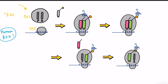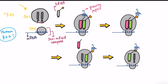The 30S subunit binds messenger RNA and initiates protein synthesis, while the 50S combines with the 30S-mRNA complex to form a ribosome, then binds transfer RNA and catalyzes the building of a protein chain. There are two main binding sites for tRNA molecules: the peptidyl site, or P-site, which binds tRNA bearing the growing peptidyl chain, and the acceptor site, or A-site, which binds tRNA bearing the next amino acid to be attached to the growing protein.